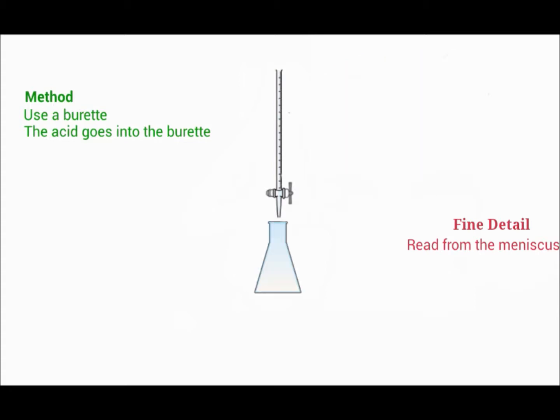Add your indicator solution and alkali to the conical flask. To increase the accuracy, you should add the alkali using a pipette.